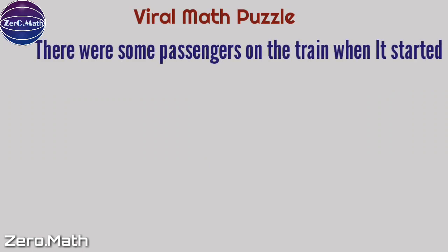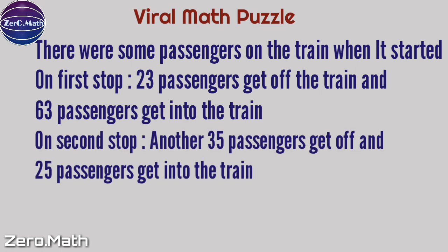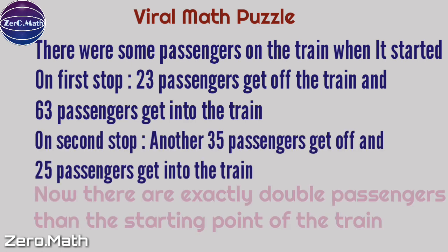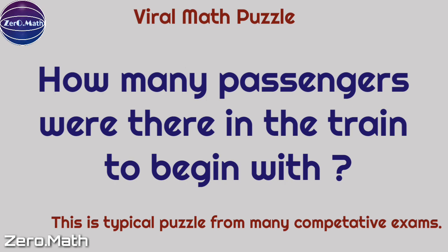There were some passengers on the train when it started. On the first stop, 23 passengers got off and 63 got on. On the second stop, another 35 got off and 25 got on. Now there are exactly double the passengers than at the starting point. How many passengers were there on the train to begin with?